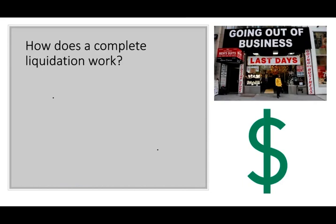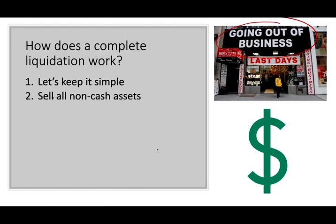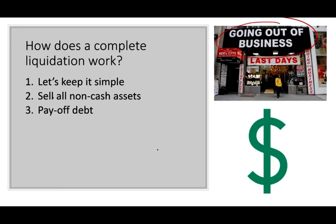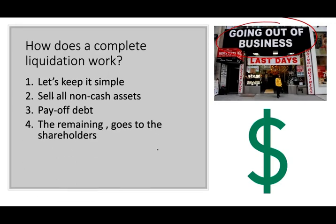Let's go through a simple example of how complete liquidation works. When the company decided to go out of business, they put out a sign going out of business and they're going to liquidate. They're going to sell all non-cash assets — sell all inventory, everything they have. Then they're going to pay off their debt, and anything that remains goes to the shareholders.